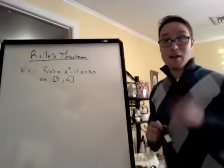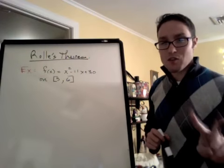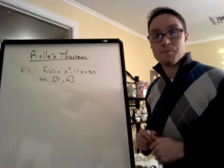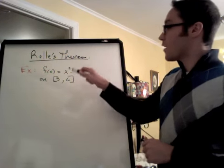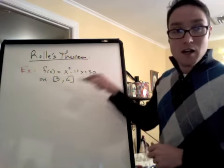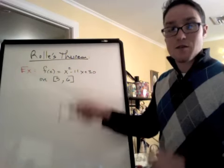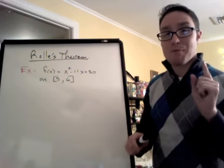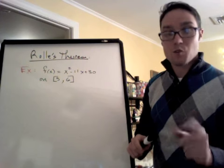So let's see an example. This is number two, by the way, on the homework that you guys are going to be doing, so you're welcome. f(x) = x² - 11x + 30 on a closed interval [5,6]. So before I do anything, I have to check that this satisfies the hypothesis of Rolle's theorem, which says...